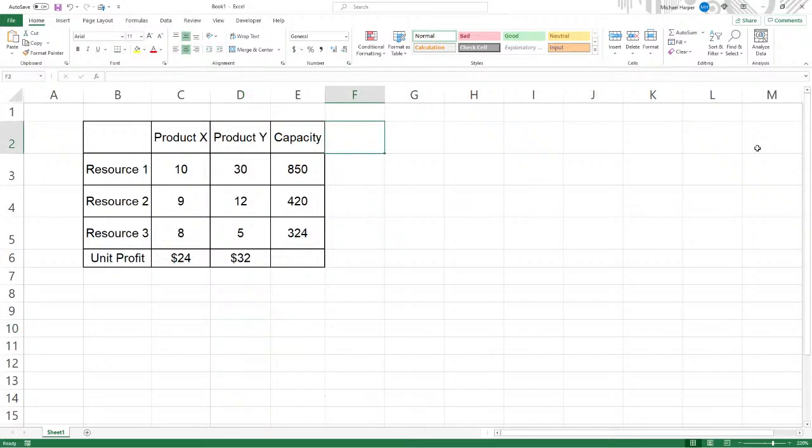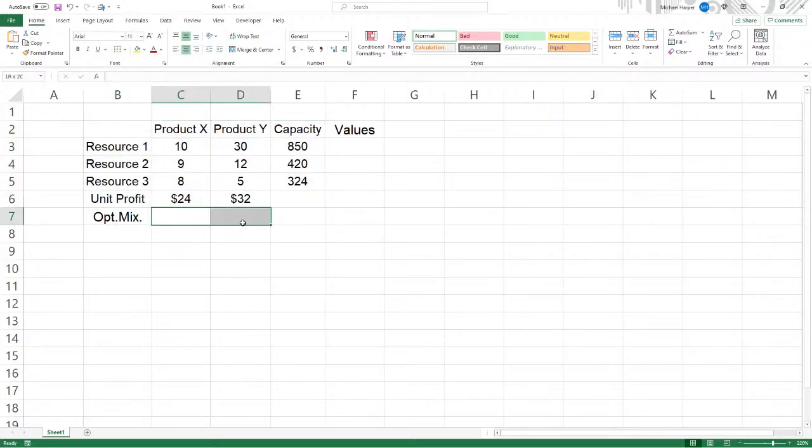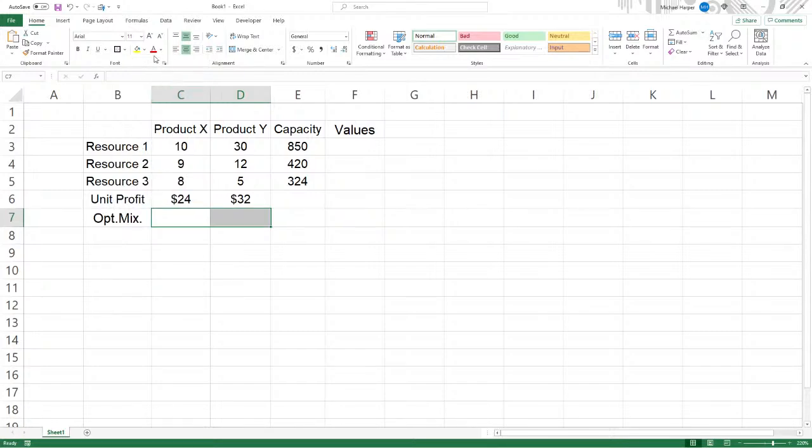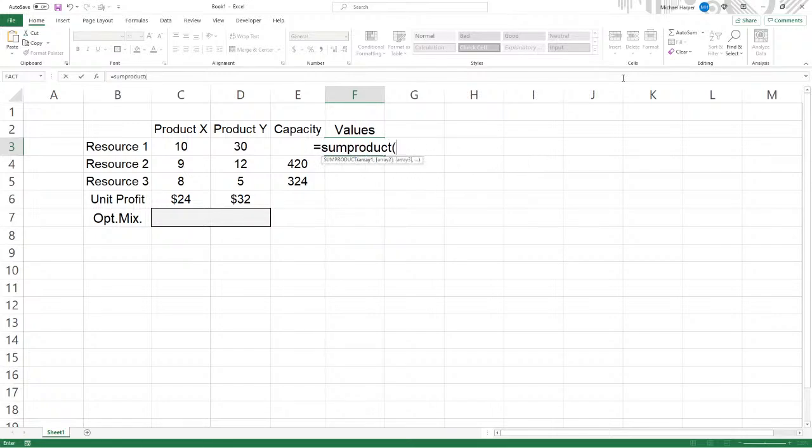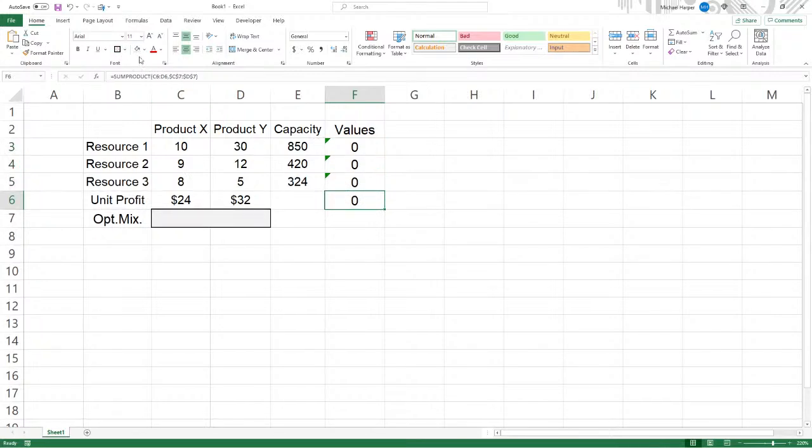So the first thing we need to do over here is have the values. And then down here, we're going to have the optimal mix. So since this is the optimal mix, let's go ahead and take this and eliminate the borders. Let's box this in. And then let's shade this a little bit just to highlight it because this is the decision variables that the solver Excel is going to be changing. Now we'll box this in and shade that because that's what we're going to be optimizing.